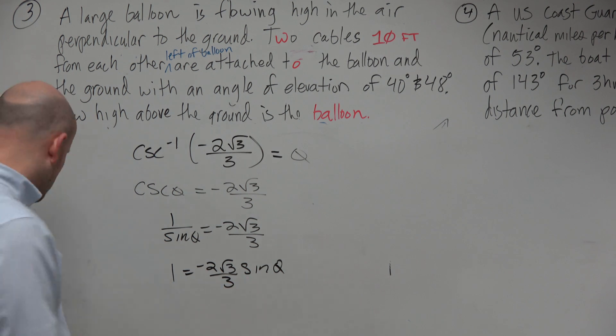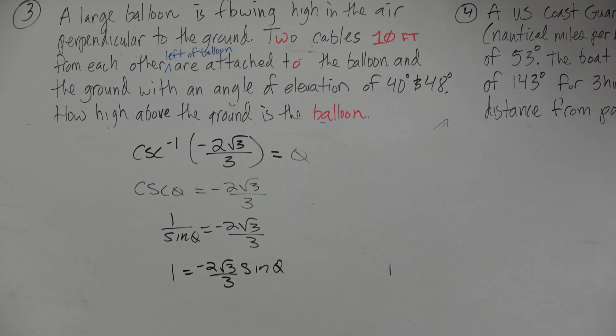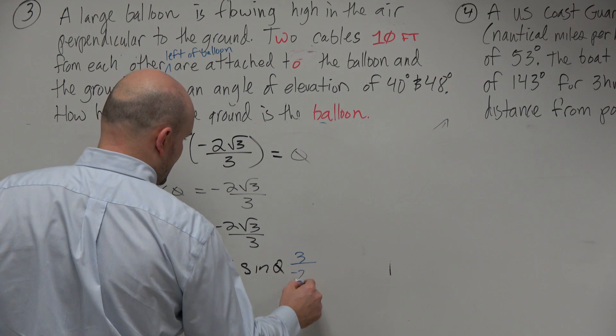To isolate this, I've got to multiply by the reciprocal. People keep on stealing my markers. But people that come to my classroom afterwards always steal my markers. So therefore, this would be 3 over negative 2 square root of 3.